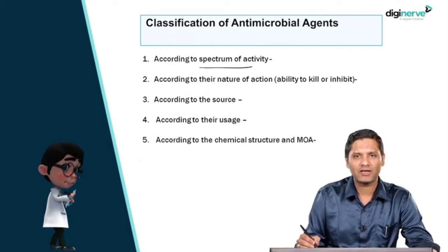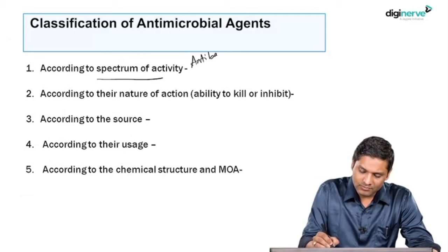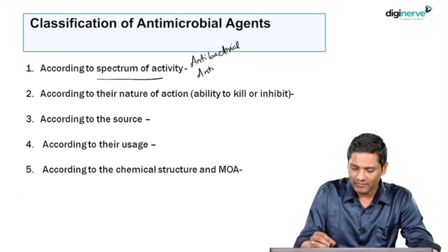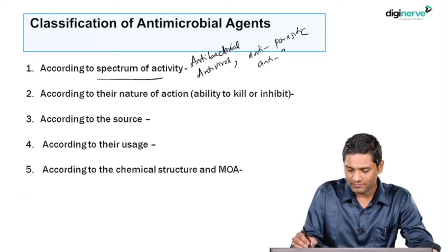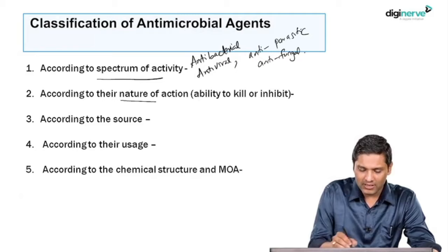How will you classify antimicrobial agents? They can be classified based upon various ways. The first is according to their spectrum of activity, which can be classified as antibacterial, antiviral, antiparasitic, and antifungal. Antibacterial will kill bacteria, antiviral will be targeted against viruses.